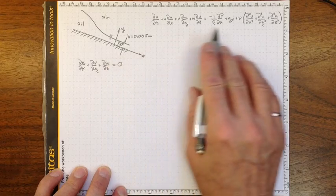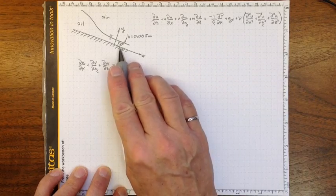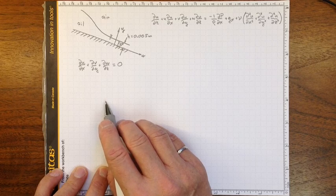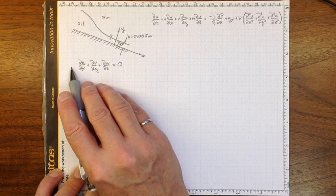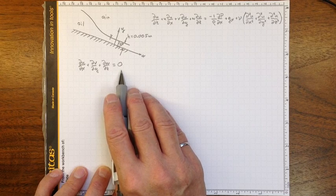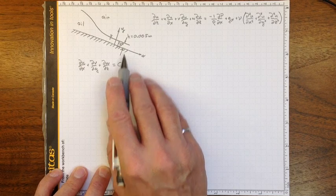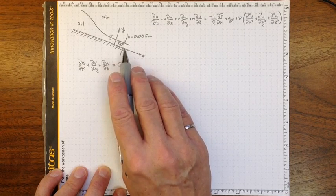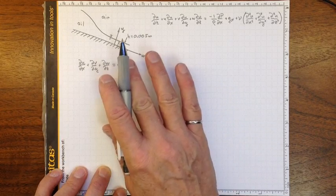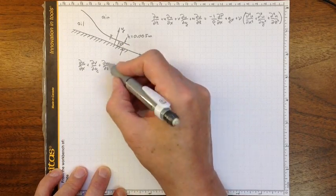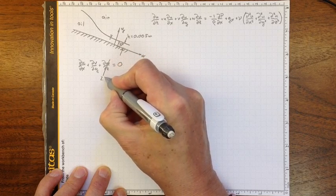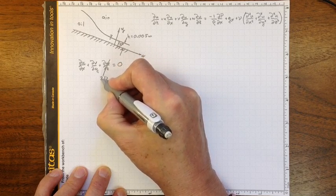Let's try and use our fundamental equations to figure out what this velocity profile ought to look like. First, the continuity equation tells us that the divergence of velocity is equal to zero. We can make some assumptions about this flow. First, let's assume that it extends a long way in the z direction, so that there's nothing changing in the z direction — it's a two-dimensional flow. So ∂w/∂z is going to be zero because it's a two-dimensional flow.